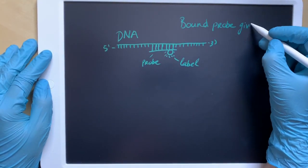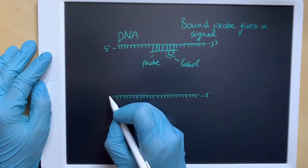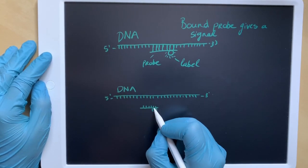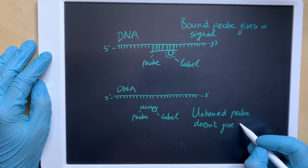These probes can detect a difference of as little as one base in the target sequence. To detect a probe after it's been bound to the target sequence, a radioactive, enzymatic, or fluorescent label must be added to the probe.